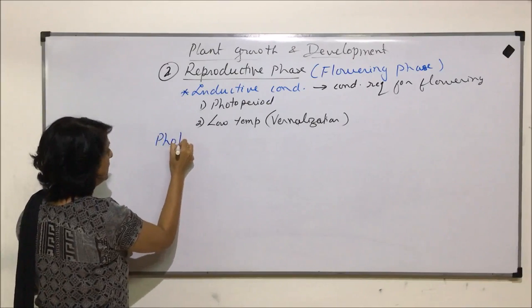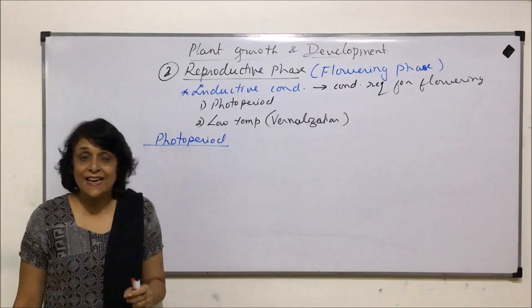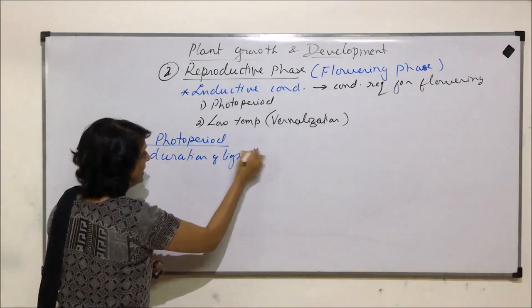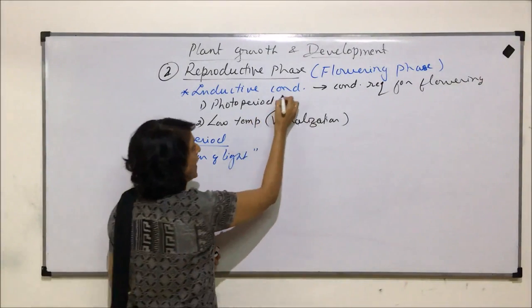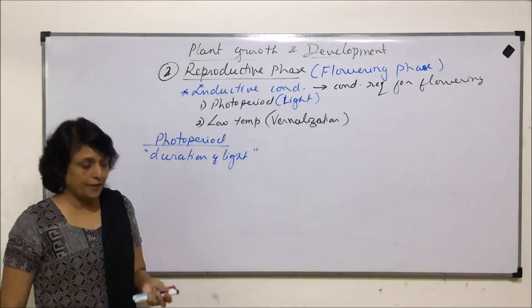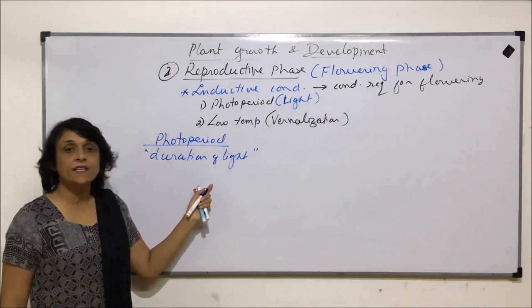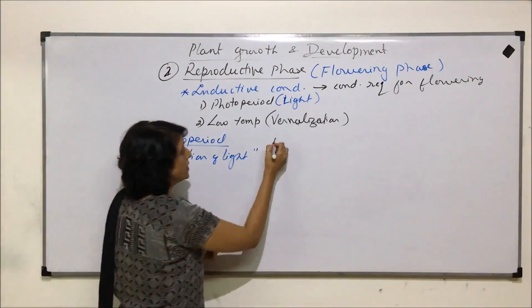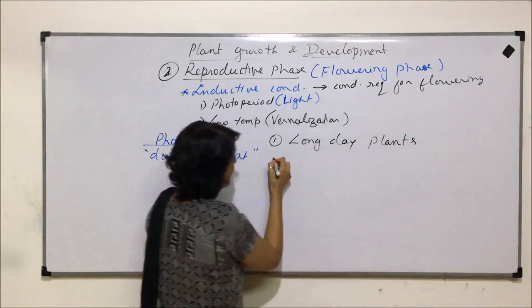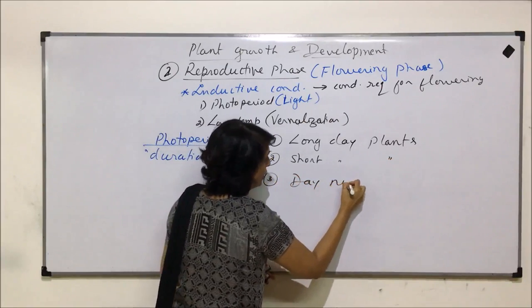So these are the two main inductive conditions required by plants for flowering in their reproductive period. Let us first start with photoperiod. When we say photoperiod, it is the duration of light or day which is required. When we are talking about photoperiod, the factor which is essential is light — specifically the duration of this light. On the basis of what duration is required, we classify the plants into three categories: long day plants, short day plants, and day neutral plants.